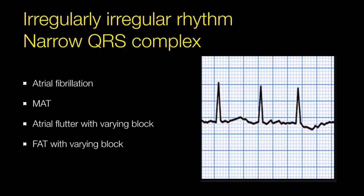When you see an irregularly irregular rhythm with a narrow QRS complex, AF is the first diagnosis you have to think about. Other arrhythmias with irregularly irregular rhythm and narrow QRS complexes are multifocal atrial tachycardia, atrial flutter with varying block, and focal atrial tachycardia with varying block.